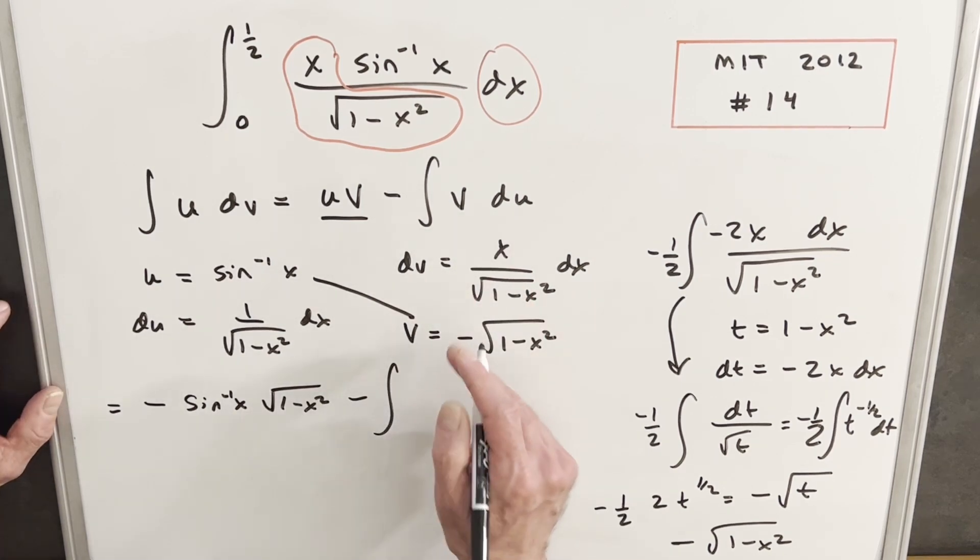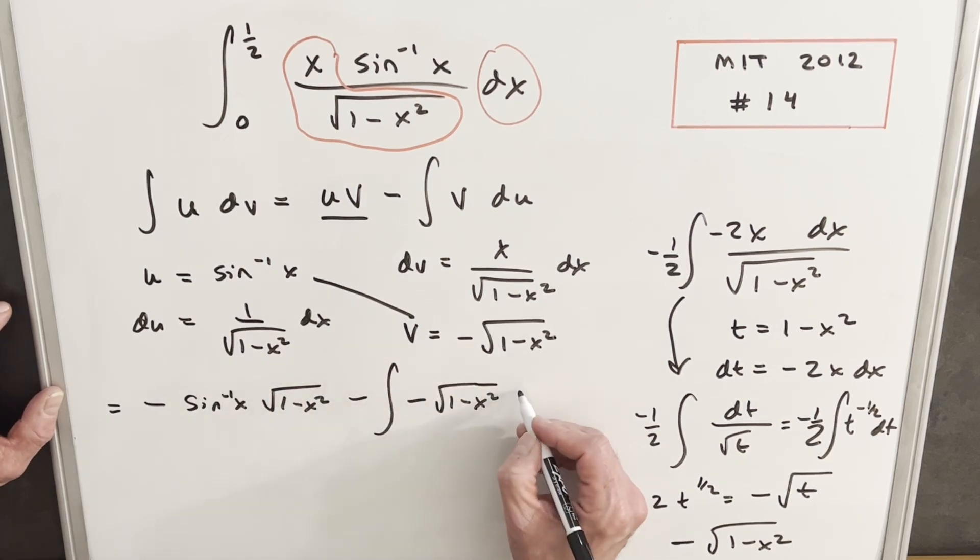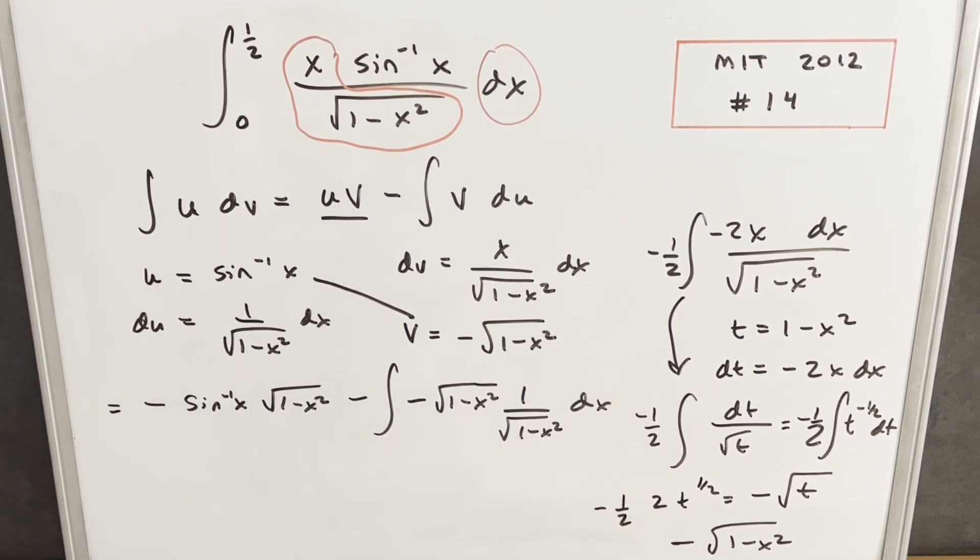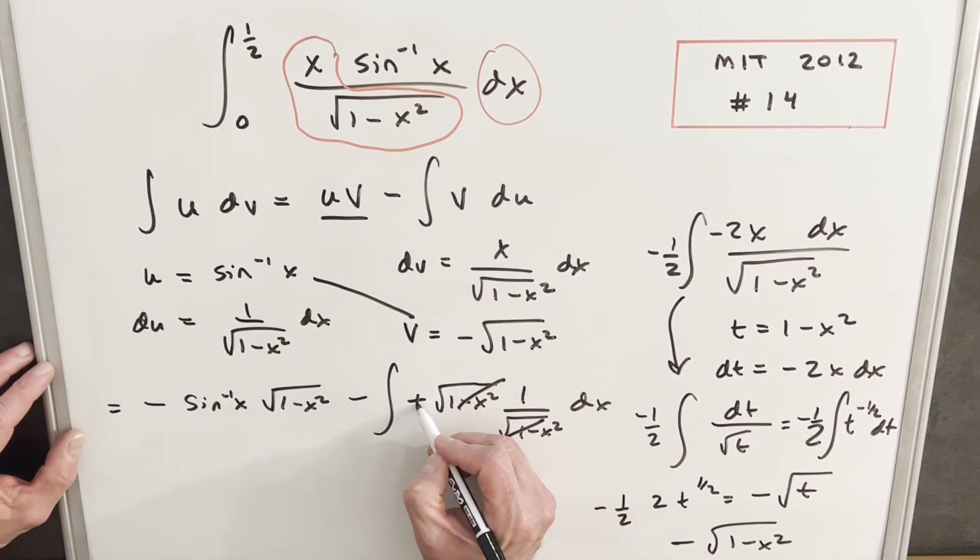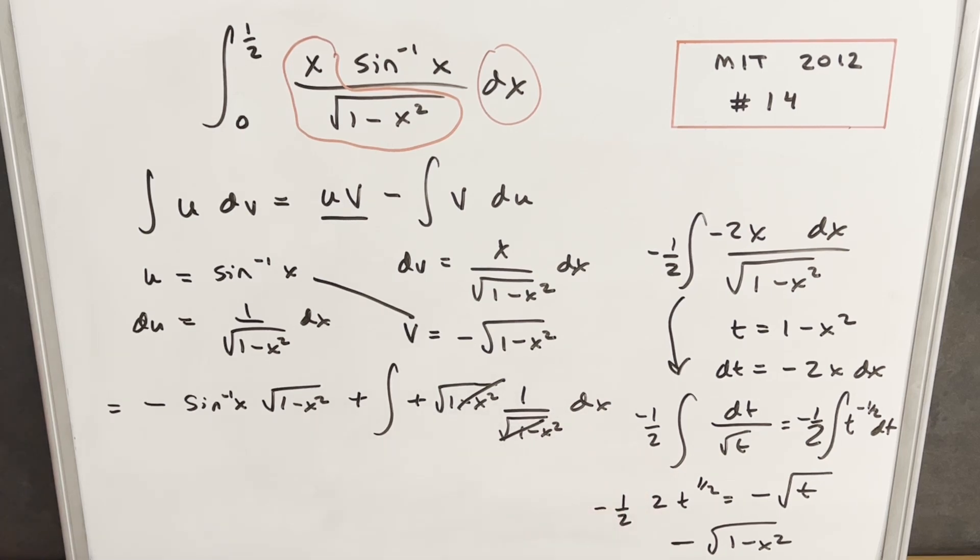And here we're going to have minus the integral of v, which is this minus square root of 1 minus x squared, du, which is 1 over square root of 1 minus x squared dx. But this is very nice, because this is going to cancel with this, and a minus sign is going to give us a plus, and we're just integrating 1 over here. Integrating this 1, we're going to have x minus arcsin x square root of 1 minus x squared.